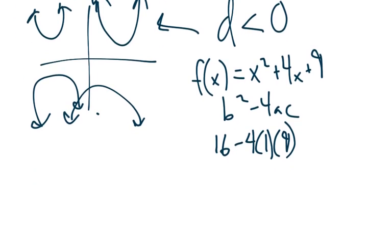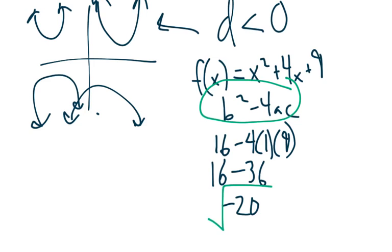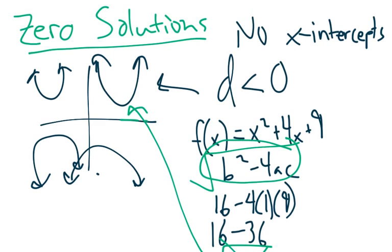We'll get 16 minus 36 for negative 20. Now, keep in mind that this is a small part of the quadratic equation. Our answer should be under a square root. This belongs under a square root. Problem is, you can't take a square root of a negative number. And so that's reflected in the graph because now there's no x-intercepts. You're not crossing the x-axis. So that's what the discriminant does for us.